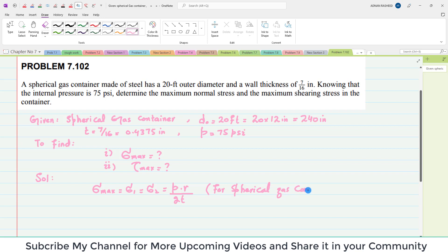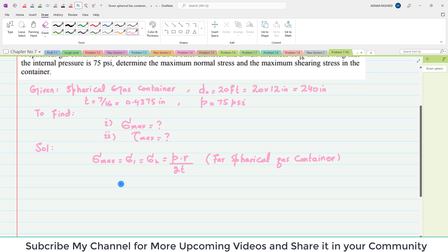Pressure vessel - here it is given as gas container. Now, we do not know R. So, R will be equal to (1/2)(D_o - 2T).